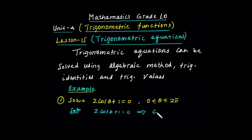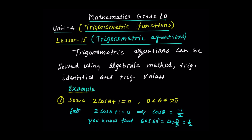It implies cos theta is equal to negative one over two. The cos theta is negative one over two. Here are the trigonometric values of special angles, from zero degrees up to 90 degrees. The special angles are zero degrees, 30 degrees, 45 degrees, 60 degrees, and 90 degrees.